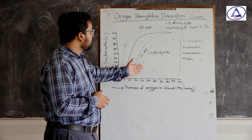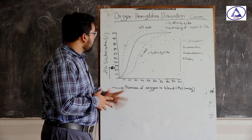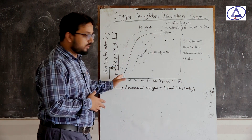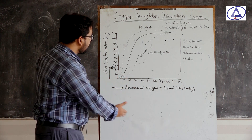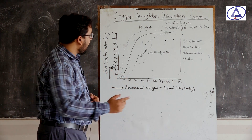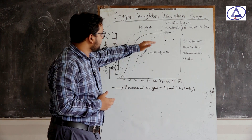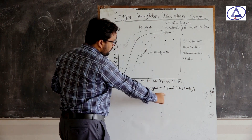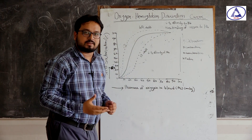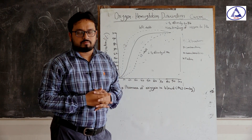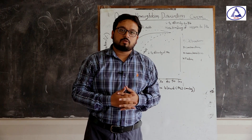Let us discuss the characteristics of the Oxygen Hemoglobin Dissociation Curve. Looking at the picture, we see the first point is that it starts from zero. It is a sigmoid shape — this is the main characteristic. At 100 mmHg partial pressure of oxygen, the curve becomes flat, which is also a characteristic. And one more thing: it is reversible. These are the characteristics of the Oxygen Hemoglobin Dissociation Curve.